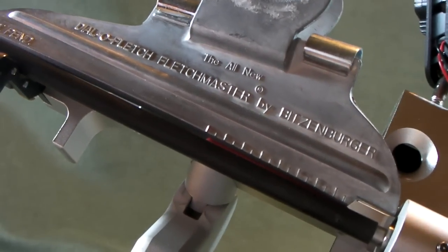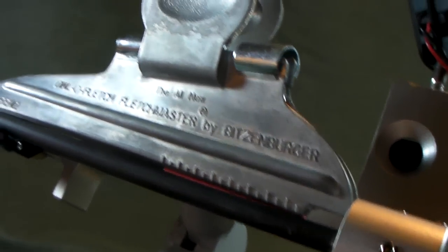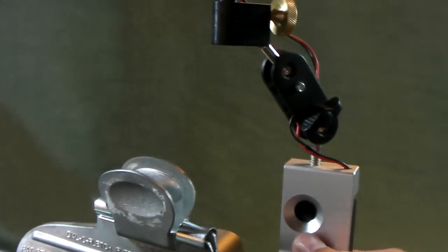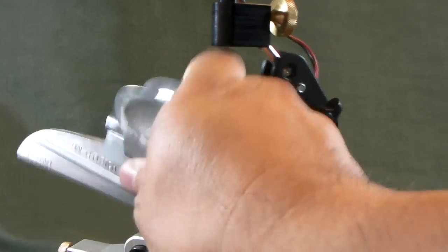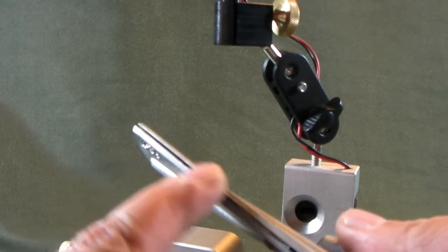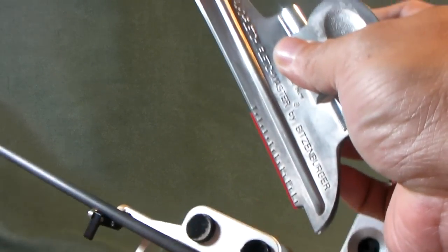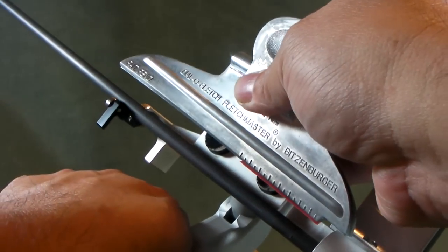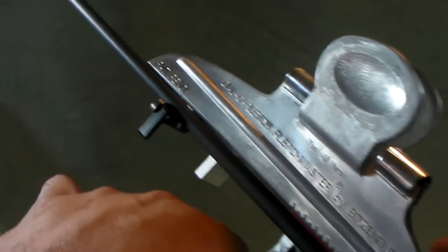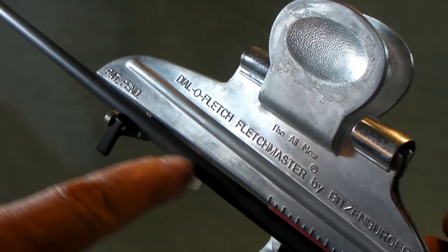So the adhesion of the jig to the clamp to the shaft is never perfect. You can see the gap is right there.